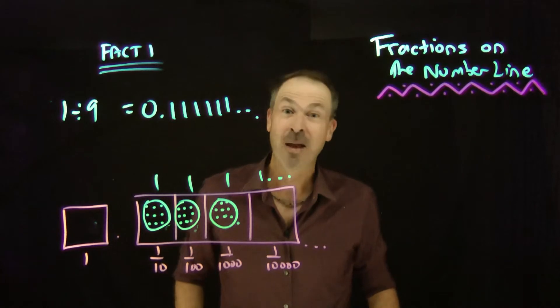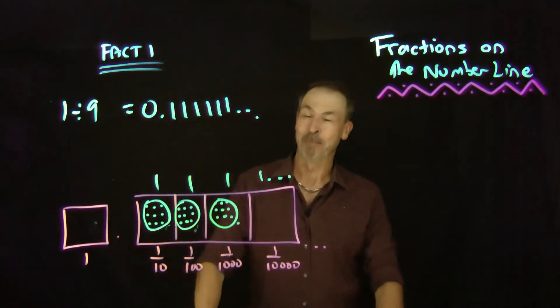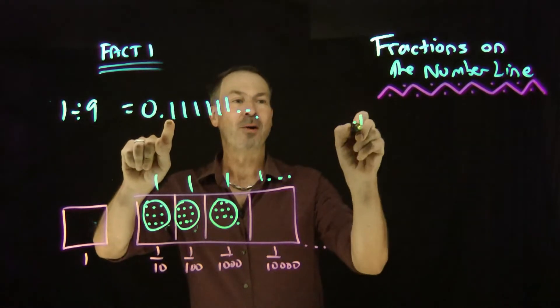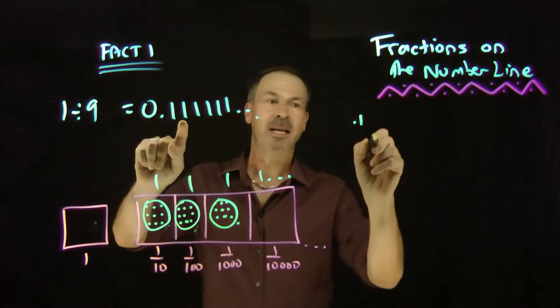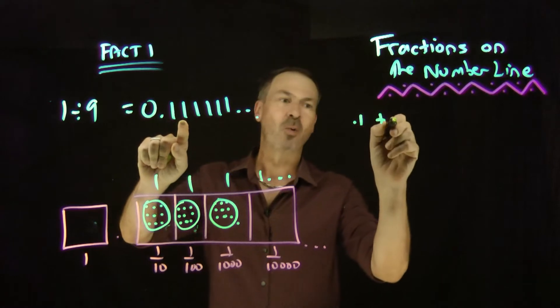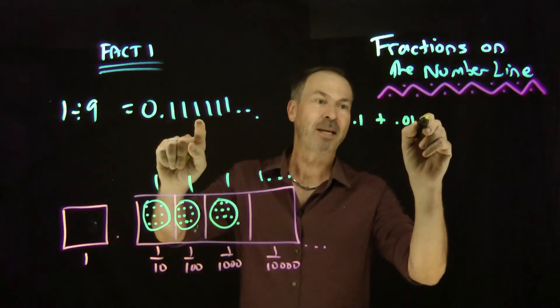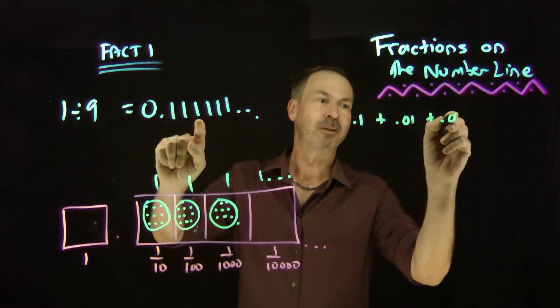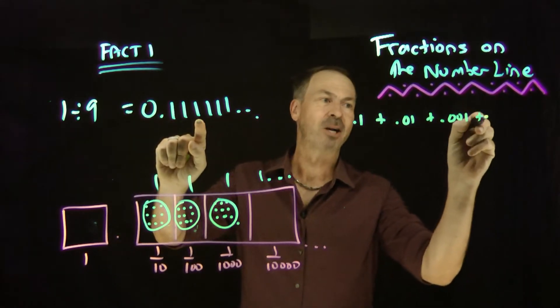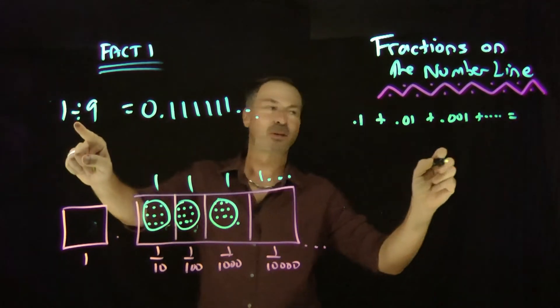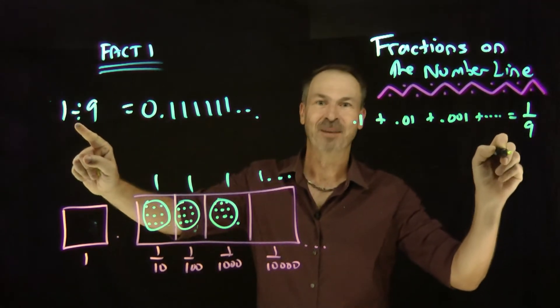Let me write it this way: 0.1 — a tenth — plus 0.01 — a hundredth — plus a thousandth, 0.001, and so on and so on. That apparently adds up to 1 ninth.